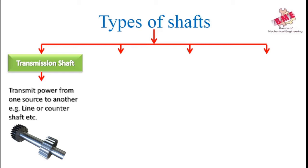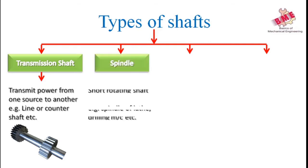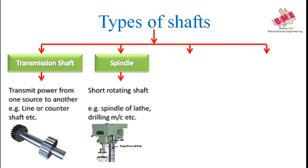In the figure, we can see that two gears are mounted on the shaft — that is called a transmission shaft. Next is the spindle. A spindle is a short rotating shaft which forms an integral part of any machine. It is used in most manufacturing machines like lathe machines, drilling machines, and grinding machines. In the figure, we can see a drilling machine having a spindle to mount a drill.